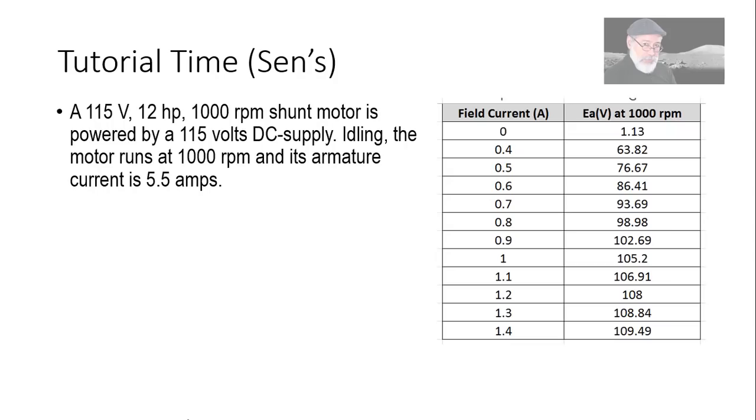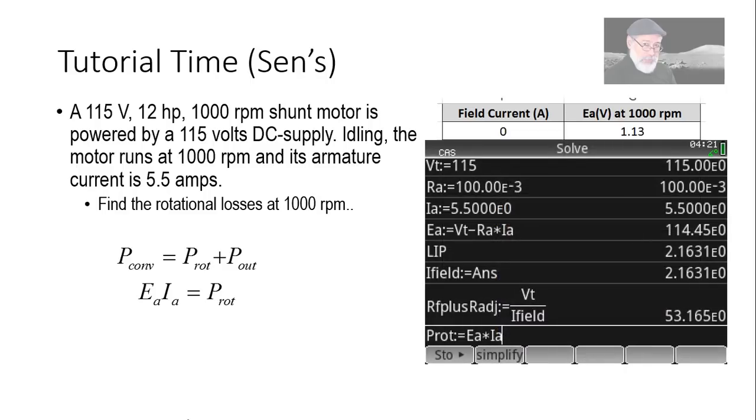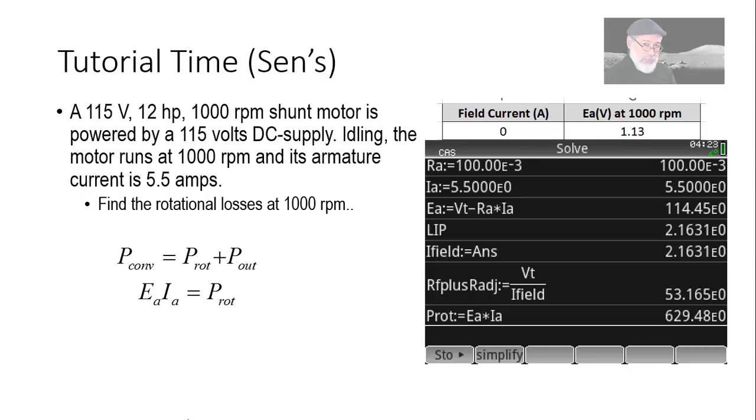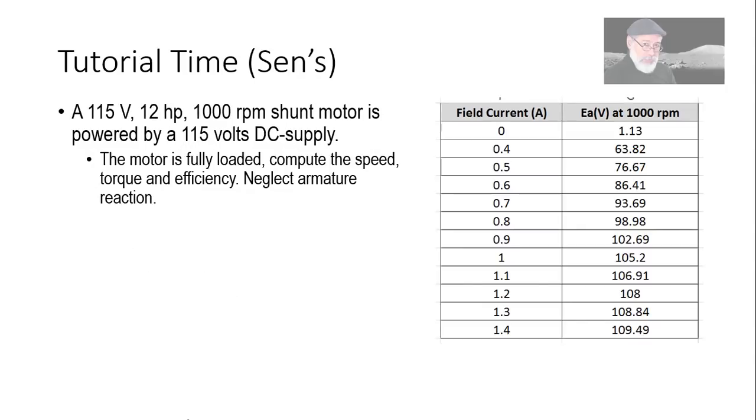More questions? Sure. Find the rotational losses. We remember that the converted power, Ea·Ia is the sum of the rotational losses plus the output power. But in idling, Pout is zero. That means that Ea·Ia will be only the rotational losses. We multiply Ea·Ia and that is the value we're looking for. Prot is Ea·Ia. We have both values. That is 629 watts. Those are the rotational losses. Moving on.